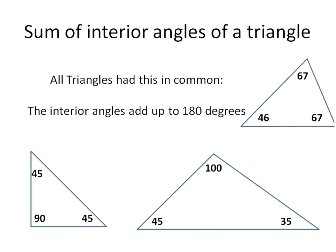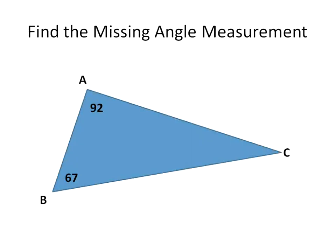Another way to test this would be to actually cut the angles off and set them all next to each other and they would make a nice straight line. So knowing that there's 180 degrees inside of a triangle, what we can do is find the missing measurement.